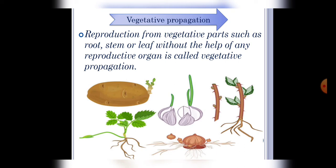And examples are you can see on your screen like potato, onion, rose, jasmine, sugarcane etc. And this type of reproduction can be of two types: natural or artificial.